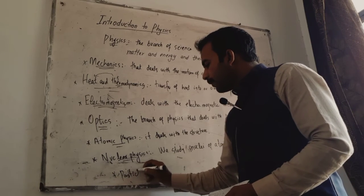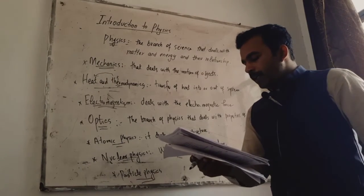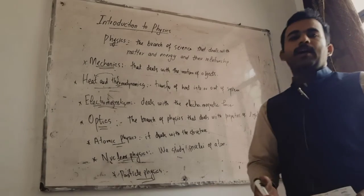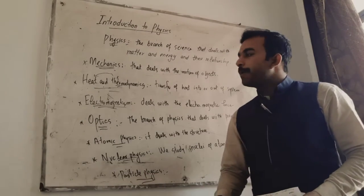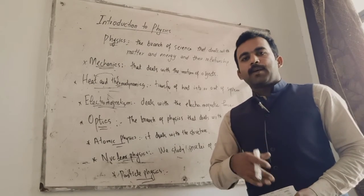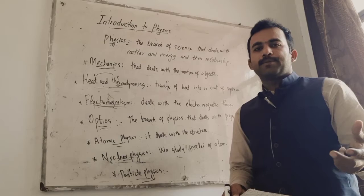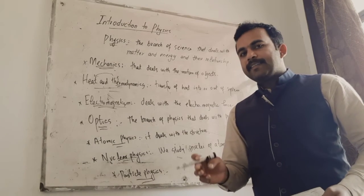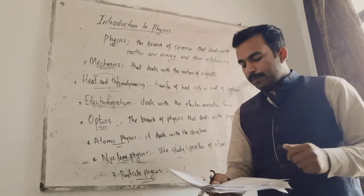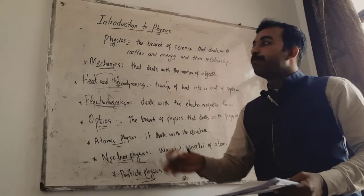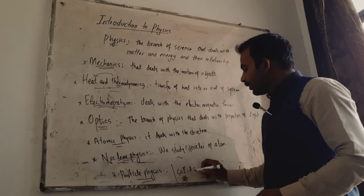The next branch is particle physics. Matter is composed of particles, and particle physics studies which particles make up matter. Another branch is solid state physics. Matter has four states: solid, liquid, gas, and plasma. The branch that studies the structure and properties of solid materials is called solid state physics.